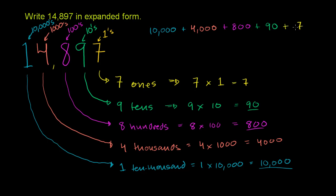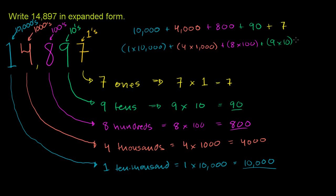So you could consider this expanded form, or you could use this version of it. Or you could say this is the same thing as 1 times 10,000, depending on what people consider to be expanded form, plus 4 times 1,000, plus 8 times 100, plus 9 times 10, plus 7 times 1. So either of these could be considered expanded form.